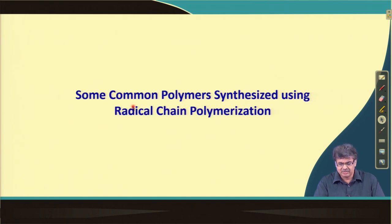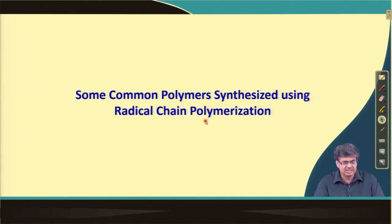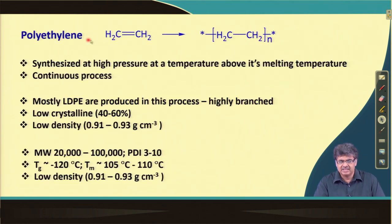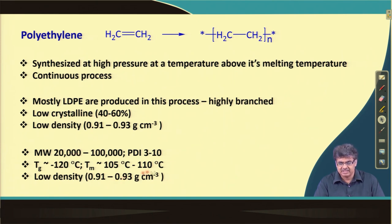Now I will quickly run through a few examples of polymers synthesized using radical chain polymerization — just for informational purposes to complete this module. One example is polyethylene, especially low-density polyethylene, which is produced by this radical chain polymerization process. These are branched polymers, so crystallinity is low.